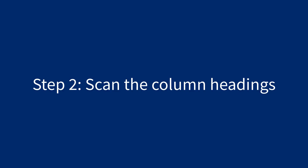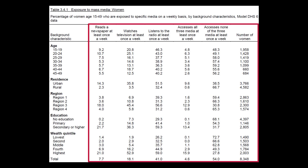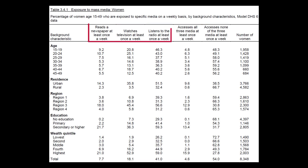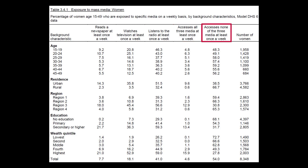Step 2 is to scan the column headings. The column headings describe how the information is categorized. This table has six columns of data. The first three columns show women that access different types of media at least once a week — newspaper, television, and radio. The fourth column shows women who access all three types of media, while the fifth column shows women who do not access any of the three types of media at least once a week.